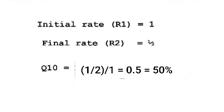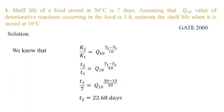Let's see the numerical. Shelf life of a food stored at 30°C is 7 days. Assuming that Q10 value of deteriorative reaction occurring in the food is 1.8, estimate the shelf life when it is stored at 10°C. So we know that the formula k2/k1, that is rate of reaction, is equal to Q10^((T2-T1)/10).